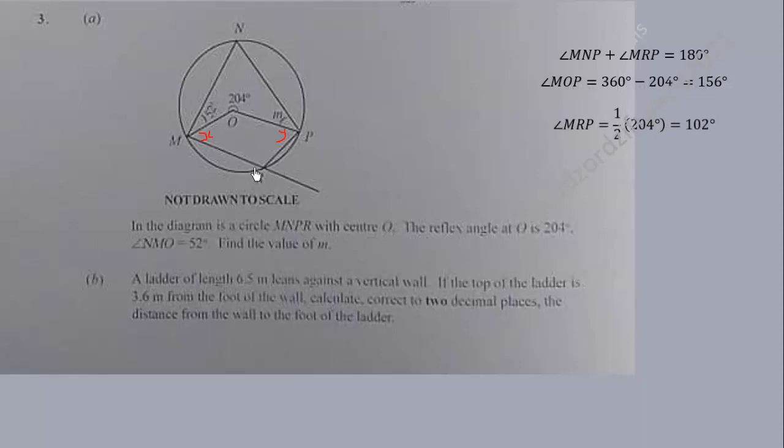Now the angle over here, MRP, is half of this angle which is 204. Half of it is 102, so this angle is 102. Then also the angle here is half of this one, which is 78. Now when we add all these angles, we should get 360. So that will give us X plus Y to be 102 degrees. So it means anytime you add X and Y, you get 102 degrees.